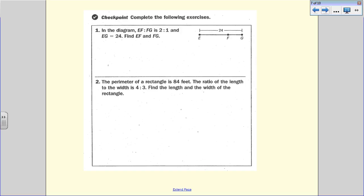All right. Checkpoints. In the diagram, EF to FG, that ratio is 2 to 1. And the whole segment, EG, is 24. Find EF and FG. So what we want to remember, and we talked about this, is this is going to be 2X. So EF is going to be our 2X. And FG is going to be our 1X. And so now with that, you should be able to use your segment addition to solve. So you guys are going to finish this, and then we will check in class.